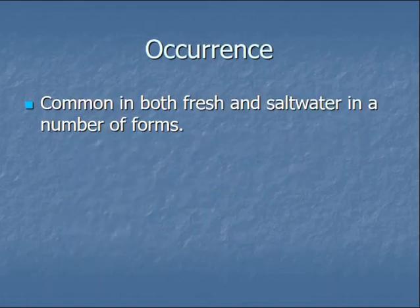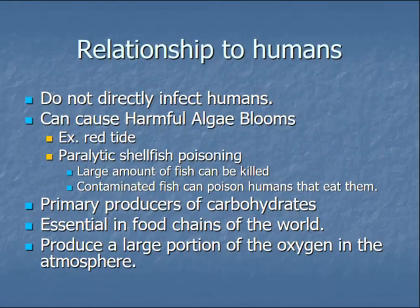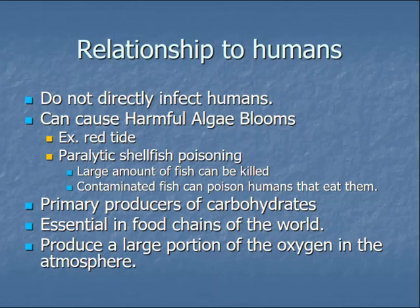Algae occur in both fresh and salt water in a wide variety of forms. Their relationship to humans is a bit different because they do not directly infect humans — we do not get an algae infection. However, algae can sometimes have what's called a bloom, or harmful algae bloom, where you get a sudden growth of a significant amount of algae. If it's a certain type of algae, as we see with red tide, there can be so much of it that it causes coloring of the ocean water.